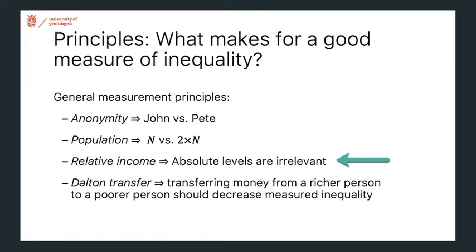Similarly, the absolute levels of income or whatever measure you're looking at should be irrelevant. So if prices were to double in an economy, that alone should not influence inequality. The fourth principle is the so-called Dalton transfer principle: if you move money from a rich person to a poor person, your measure of inequality should decrease. You're making a progressive transfer, equalizing the income distribution, and a good measure of inequality should pick up this narrowing.